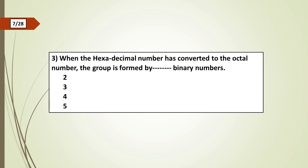Third question: When the hexadecimal number has converted to the octal number, the group is formed by dash binary numbers: a) 2, b) 3, c) 4, d) 5.